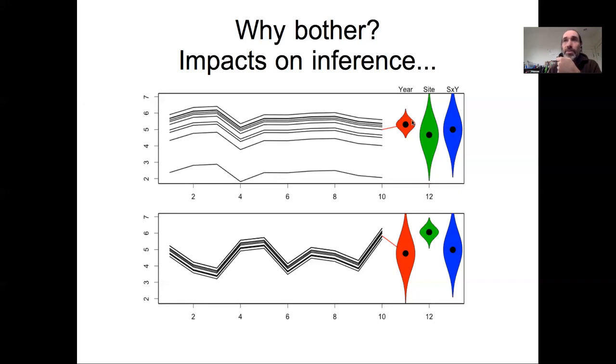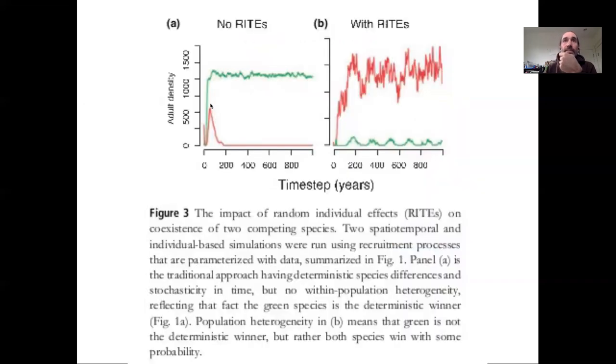This shows what happens if we take some of those random individual and temporal effects and put them into a process-based model. Here we're seeing that in the left-hand side, the predictions of adult tree densities where we do not put random effects in the model, the green species beats the red species consistently. By contrast, if we put the random effects in, we not only change which species is dominant but we change the coexistence - the species are able to coexist. This is without a change in the means of any of the parameters; this is a change in how the variability is handled within these models.